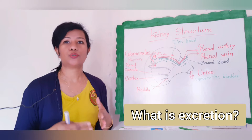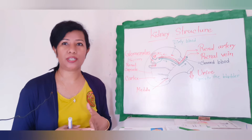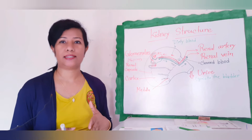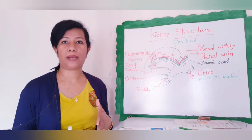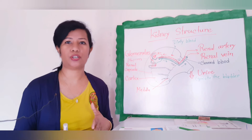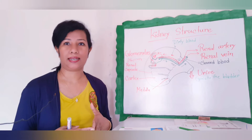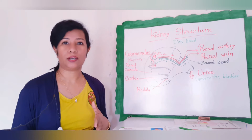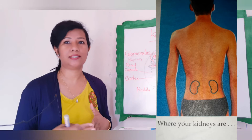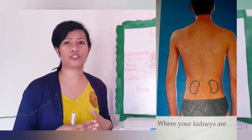So what is excretion? What is the definition? Excretion is the process by which metabolic waste products and toxic materials are removed from the body of an organism. The urinary system of a mammal consists of a pair of kidneys.